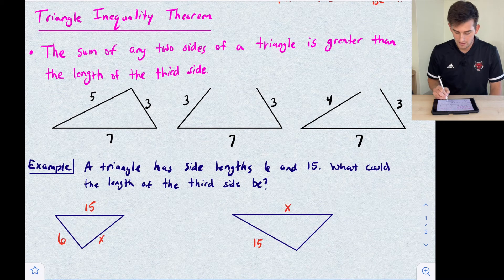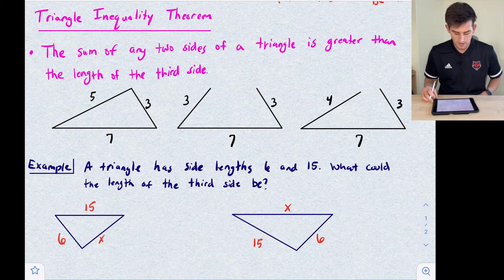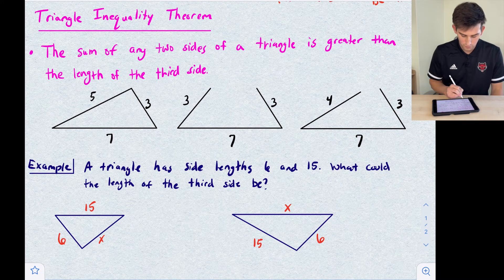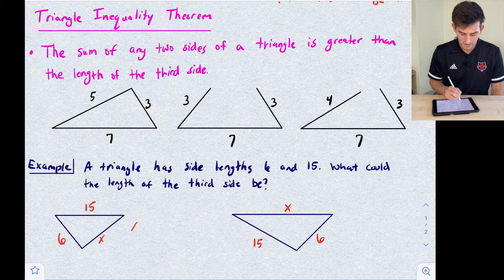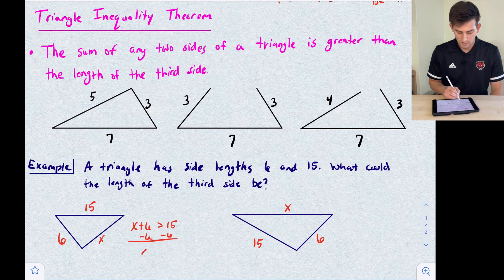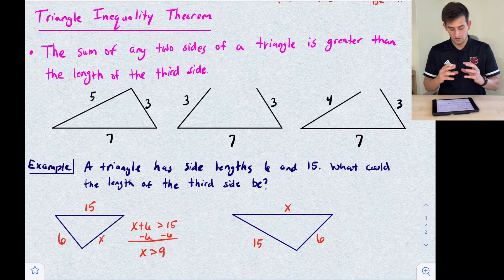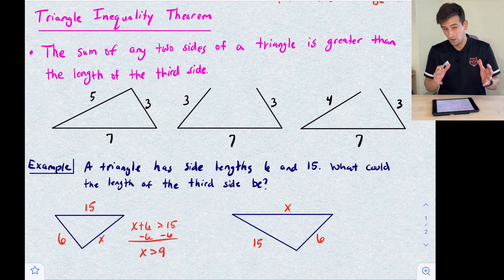Now we can set up a couple inequalities to figure out the range of what our values for x could be. For the smaller one on the left we would say x plus 6 has to be greater than 15. Now we subtract 6 and we get x has to be greater than 9. So x needs to be greater than 9 because 9 and 6 would be 15 and we know that would not work.